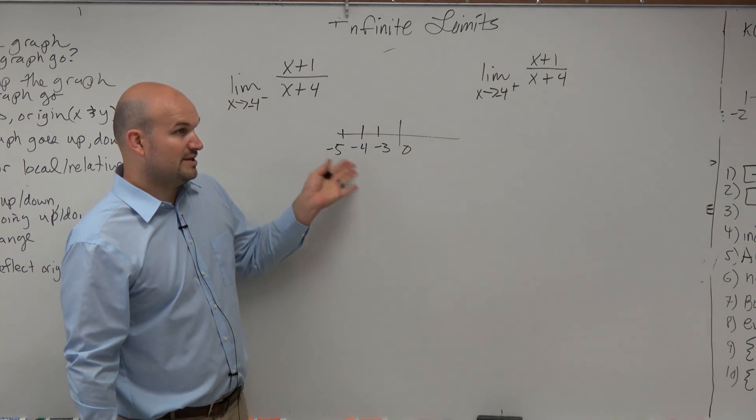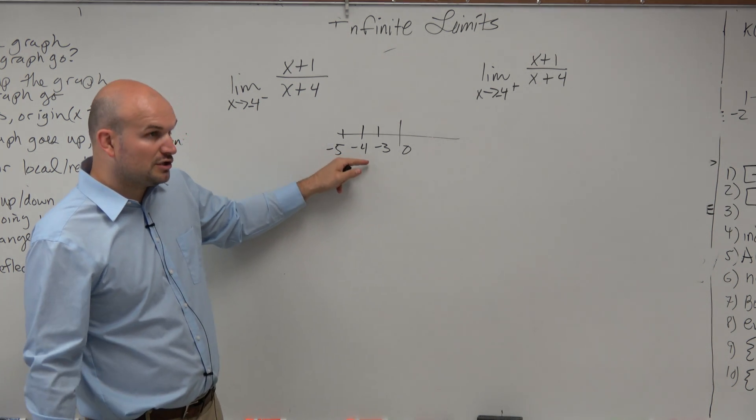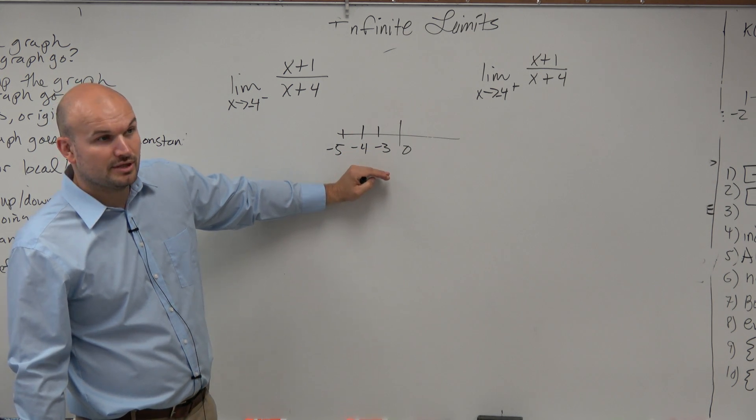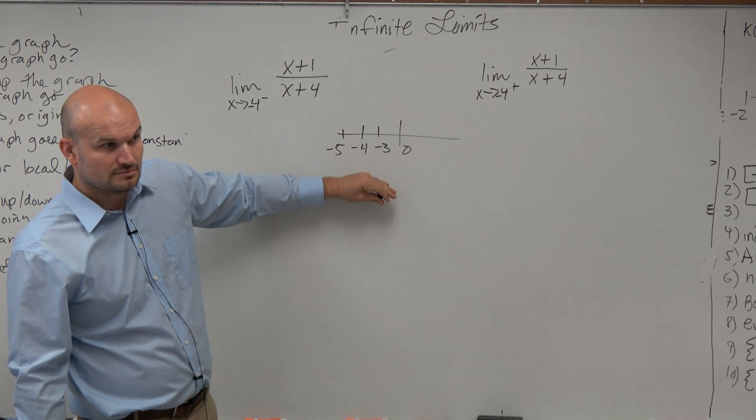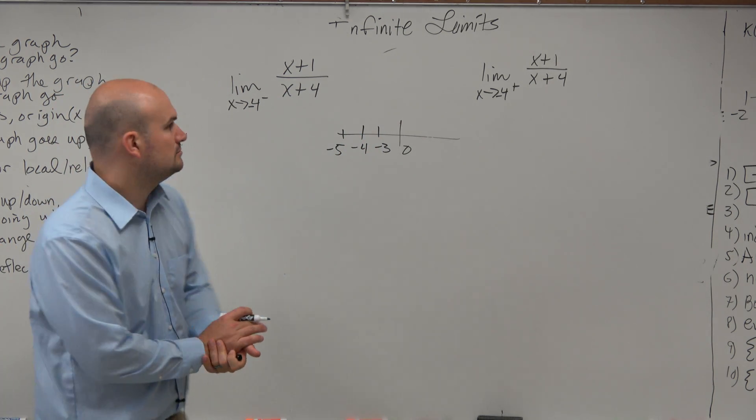From the real number system, going into getting really close to from the left, what would be a really close number? Negative, let's do 4.001.